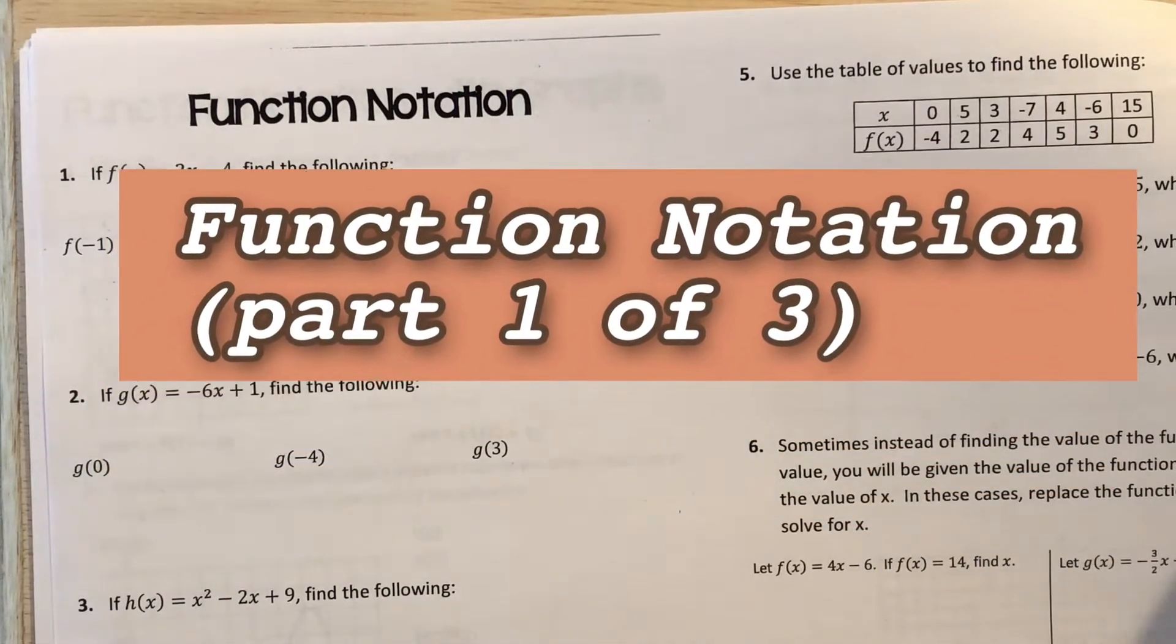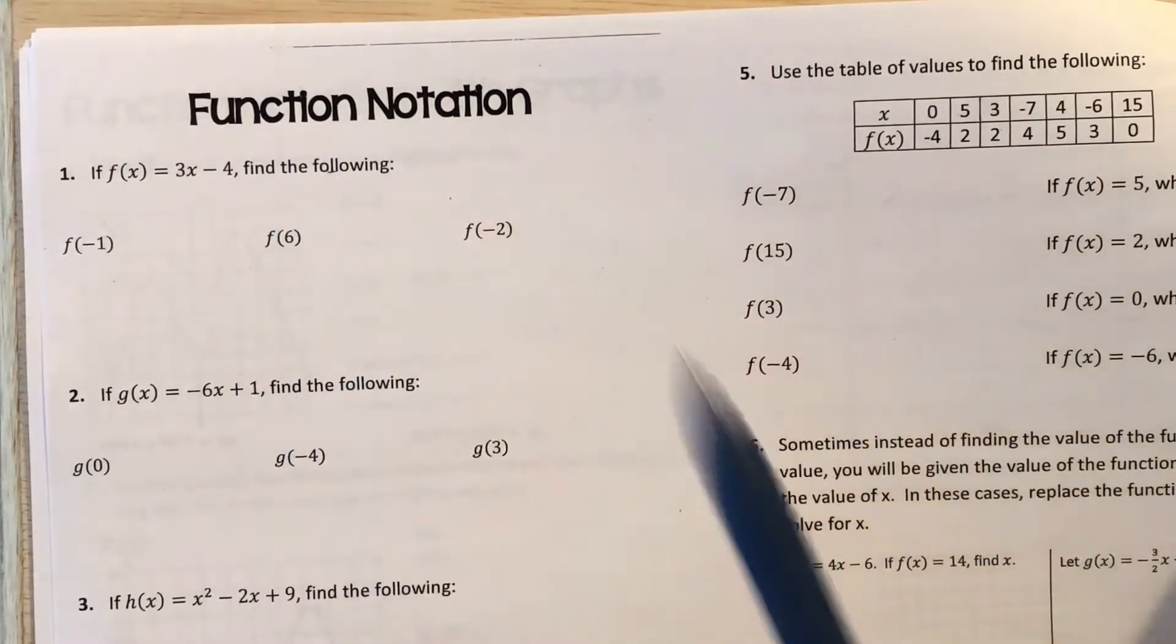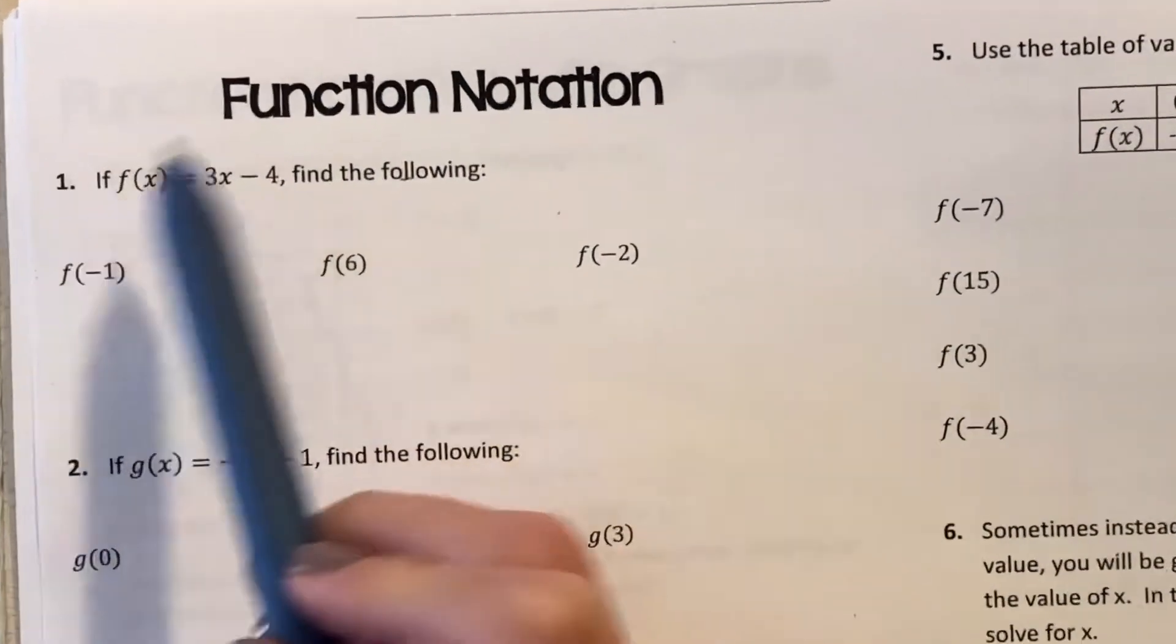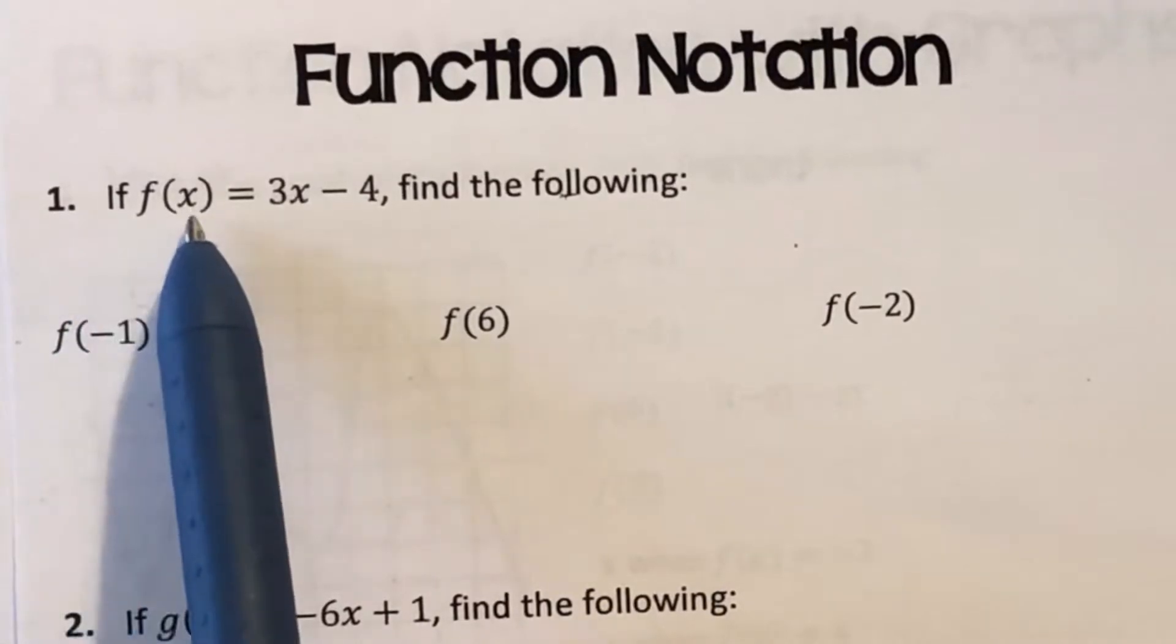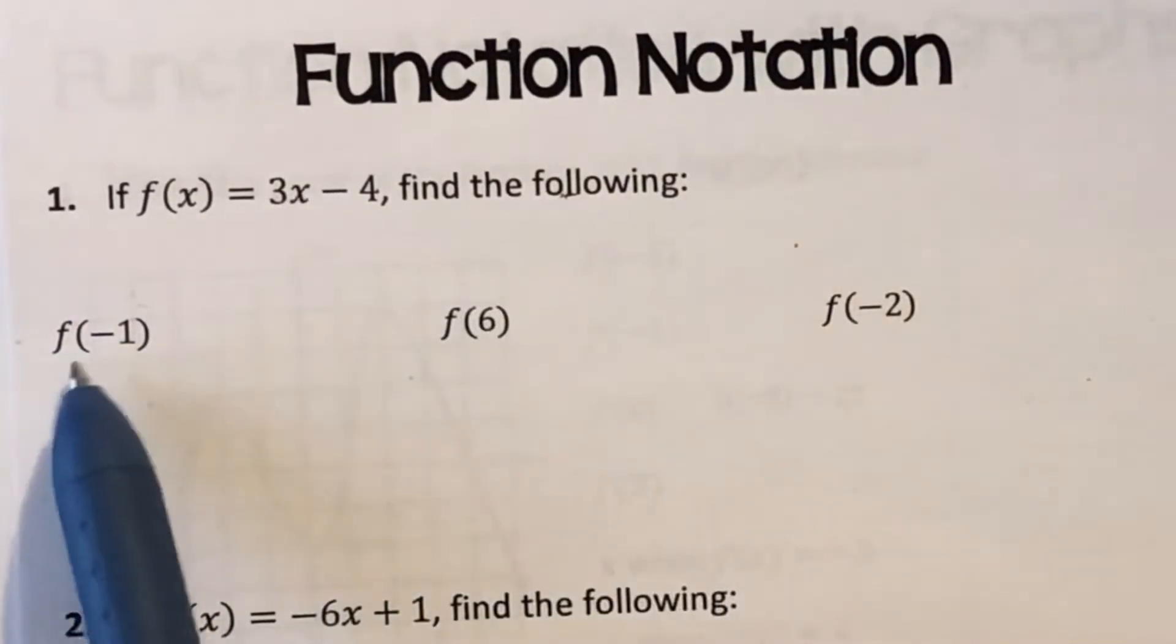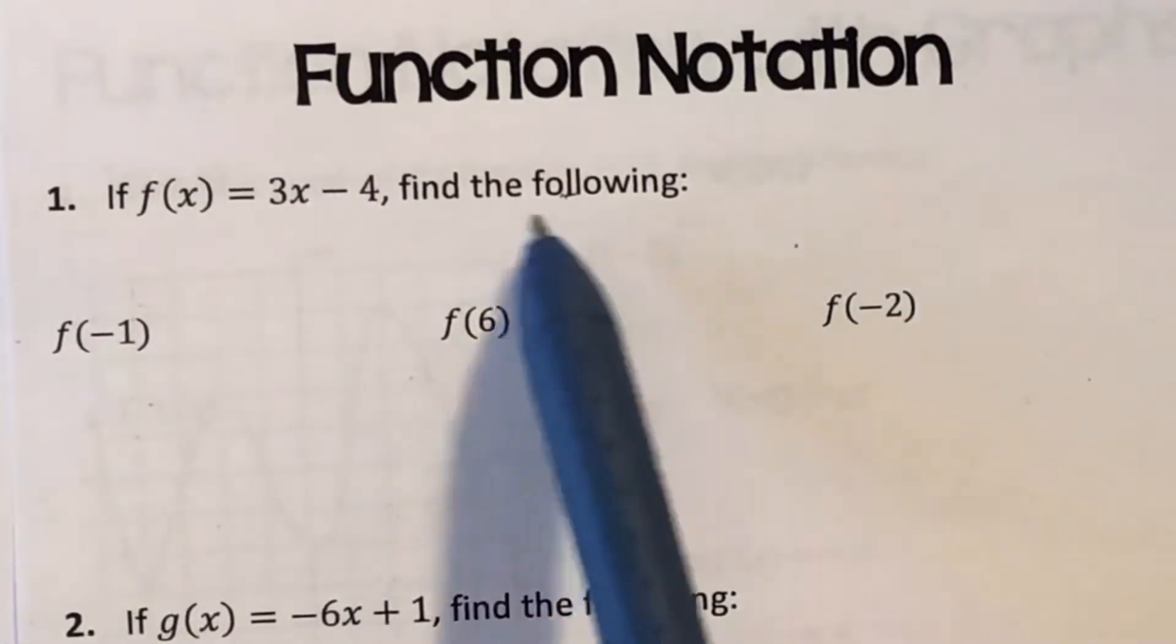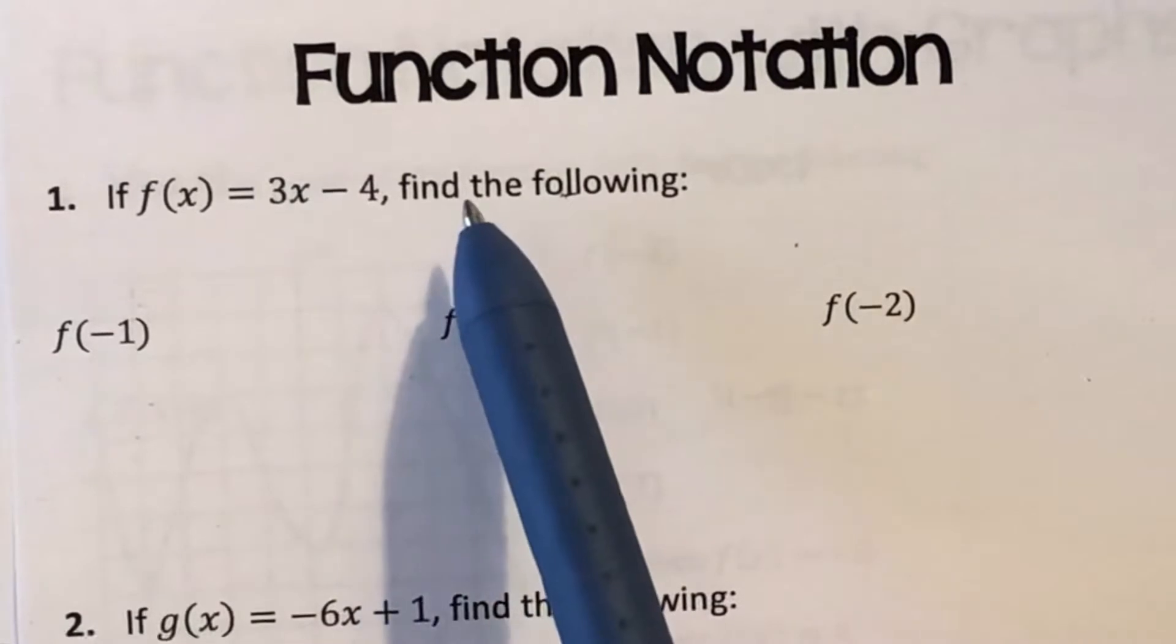Let's get some practice evaluating functions using function notation. For example 1, we see if f(x) equals 3x minus 4. I want to find the following: f of negative 1, f of 6, and f of negative 2. What does this even mean?